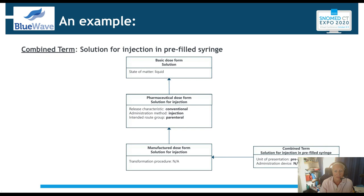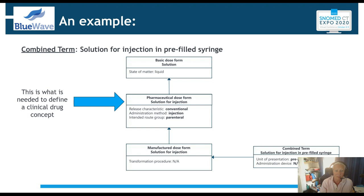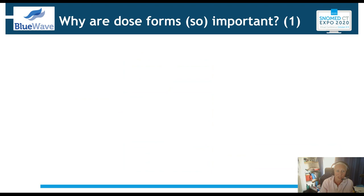Here's an example: the combined term 'solution for injection in pre-filled syringe' has a manufactured dose form of solution for injection, and the unit of presentation is pre-filled syringe. Going up from the manufactured dose form, there are different attributes in the pharmaceutical dose form model. When defining a clinical drug concept — the lowest level in the international drug model — you need the pharmaceutical dose form. If you have a combined term, you might need to decompose it to get the pharmaceutical dose form before doing automated mapping to clinical drug.